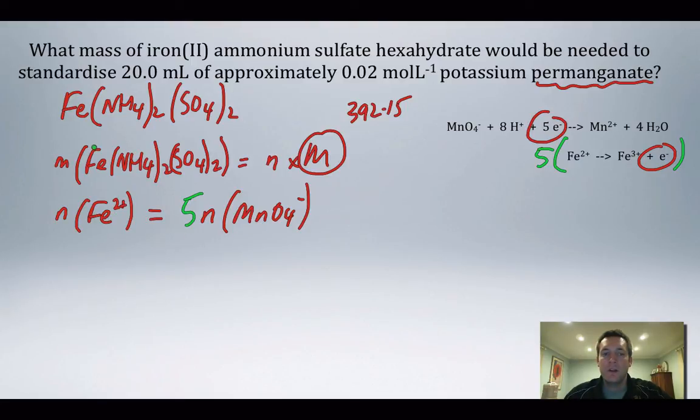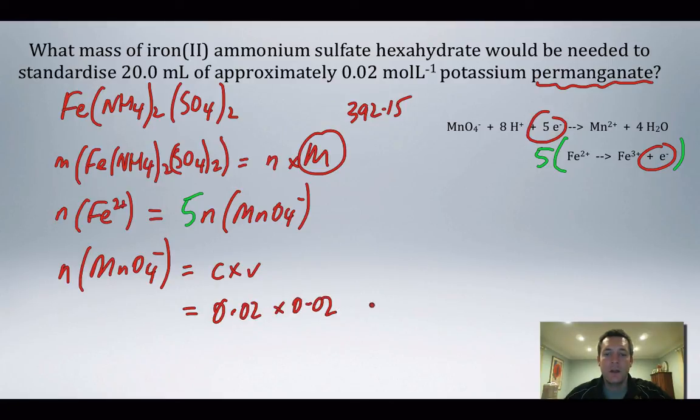I can find the number of moles of iron(II), and therefore the number of moles of iron(II) ammonium sulfate, by finding the number of moles of permanganate ions. The number of moles of permanganate is simply C times V, which is 0.02 multiplied by 0.02, and that's equal to 0.0004 moles.